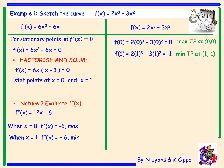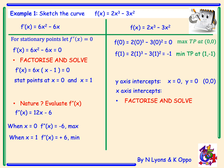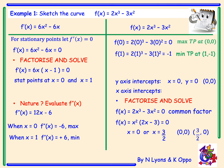Now that we have our stationary points, the next step is to find our x and y intercepts. The y-intercept occurs when x = 0; there is no constant term in the function, so y = 0. For the x-intercepts, we equate f(x) = 0 and factorise: 2x³ - 3x² = 0 gives x²(2x - 3) = 0. So we have roots when x = 0 or x = 3/2, giving us the points (0, 0) and (3/2, 0).